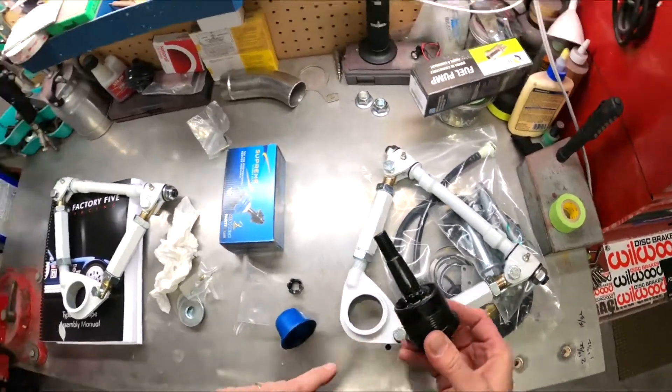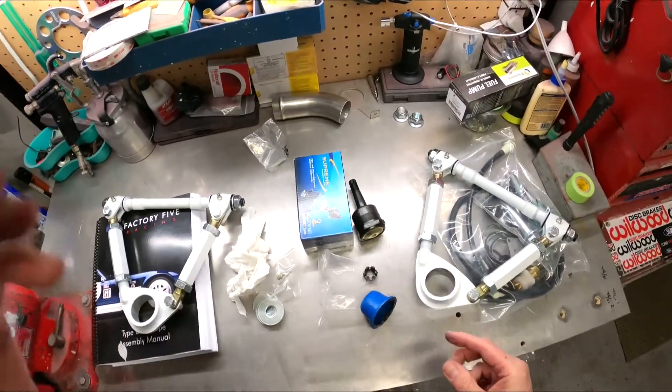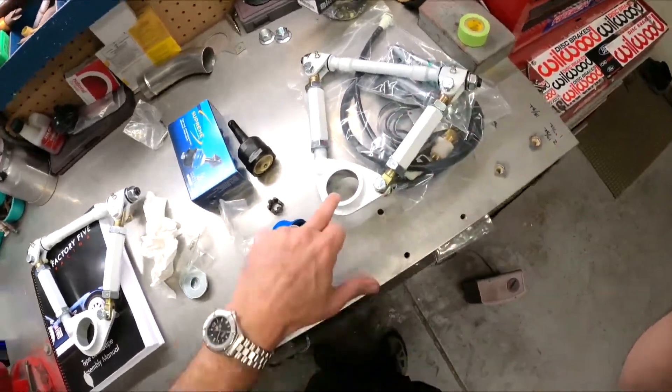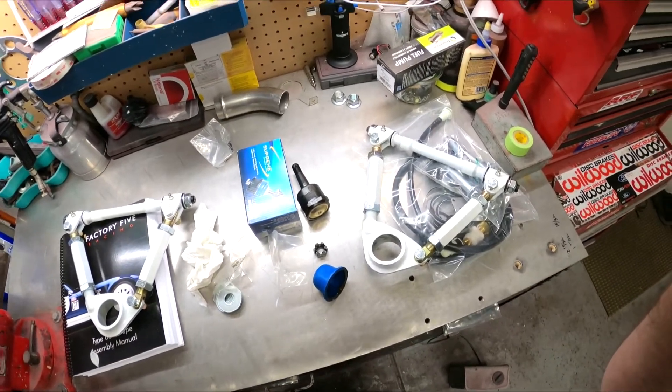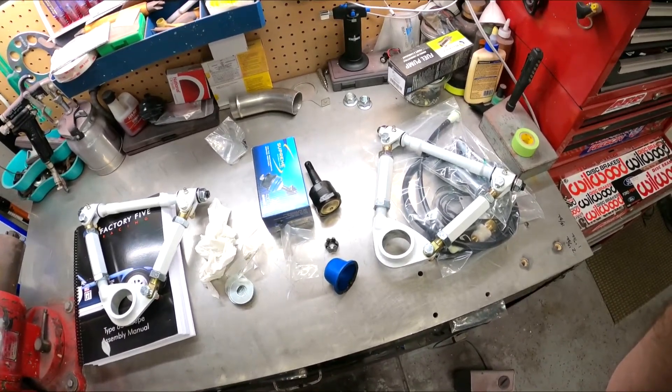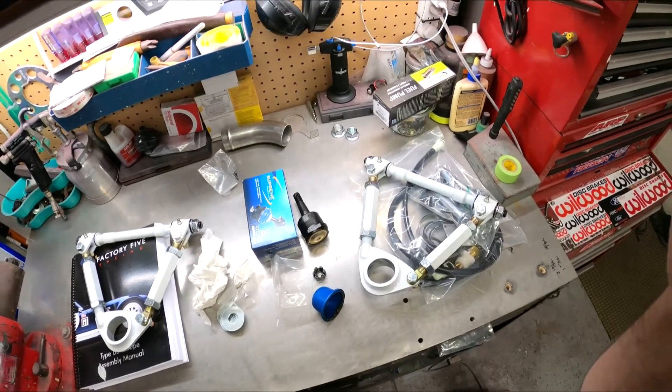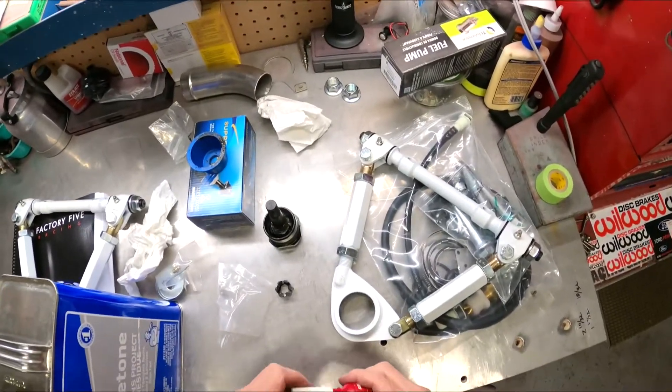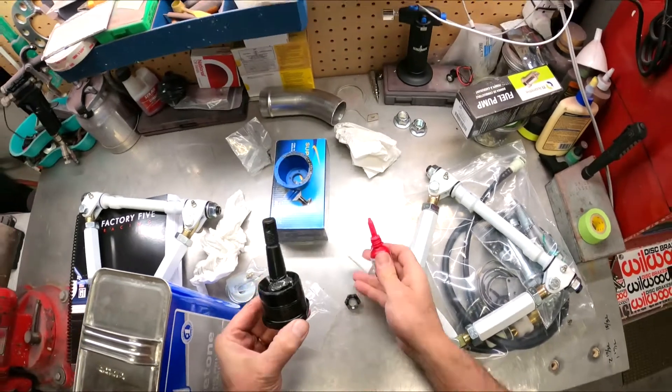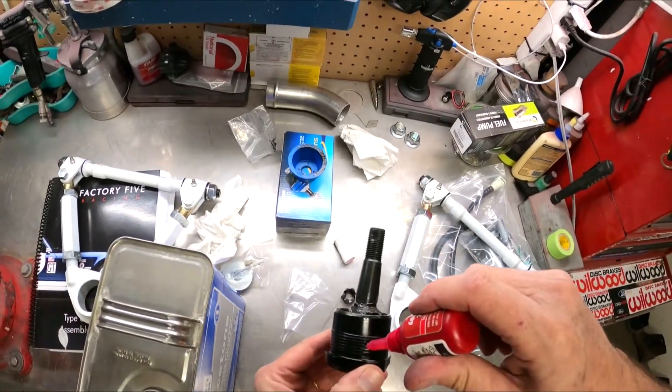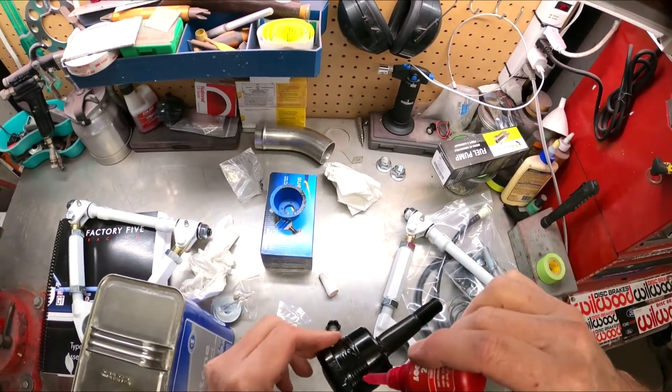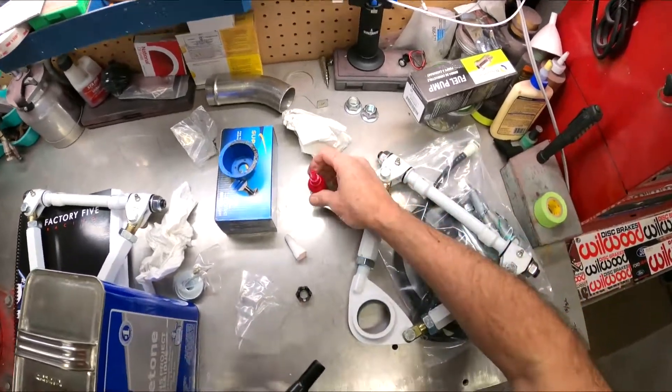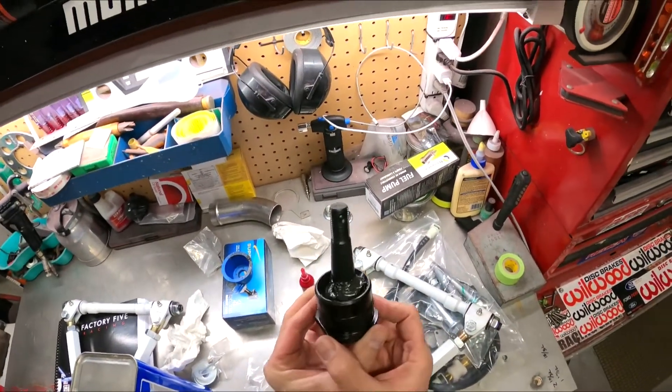I'm going to clean up all these threads because Loctite is not going to stick to that. I'm going to wipe it down with some acetone. You can see we're getting some grease in there, and that's not going to be conducive for a solid seal. We'll get some red Loctite in there and screw this thing in and lock it down. I'm putting some red Loctite into here, and then we'll screw this thing in.